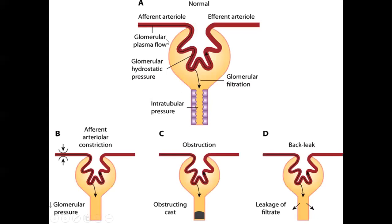For adequate GFR, we need adequate hydrostatic pressure in the glomerular capillaries, low intra-tubular pressure, and a permeable glomerular membrane. The afferent arteriole brings blood into the glomerulus and the efferent arteriole takes it away. Any abnormality in these factors can cause kidney toxicity or kidney abnormality.